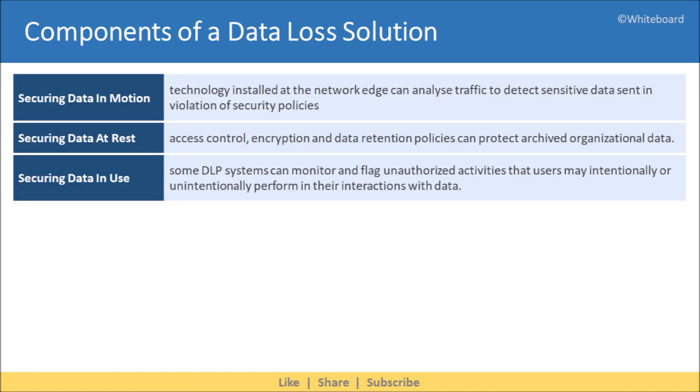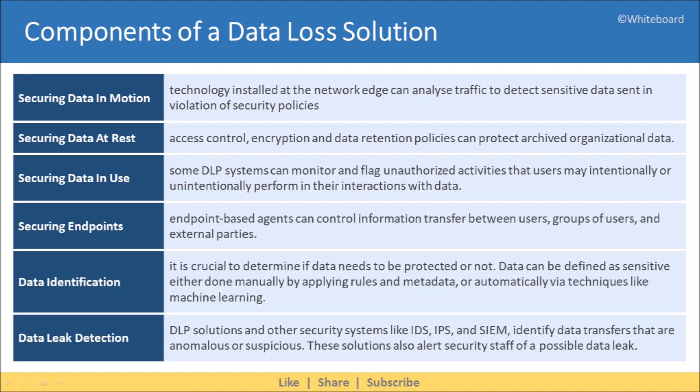Let's understand various components of DLP. First is securing data in motion — it is the technology installed at the network edge that can analyze traffic to detect sensitive data sent in violation of security policies. Next we have securing data at rest, which uses access control, encryption, and data retention policies to protect archived organizational data. Next we have securing data in use — some DLP systems can monitor and flag unauthorized activities that users may intentionally or unintentionally perform in their interactions with data.